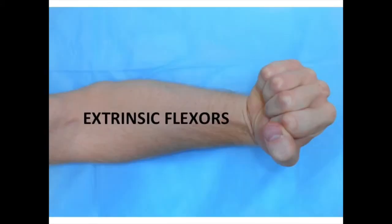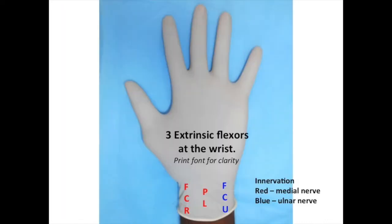Now let's discuss the extrinsic flexors. If you flex your wrist and make a fist, you can feel the contraction of these muscles. Pause the video, flex your wrist while making a fist, and palpate these muscles as they contract. You have three extrinsic flexors at the wrist. On the ulnar side of the wrist, you have the Flexor Carpi Ulnaris, or the ulnar flexor of the wrist. On the radial aspect, you have the Flexor Carpi Radialis, which is the radial flexor of the wrist.